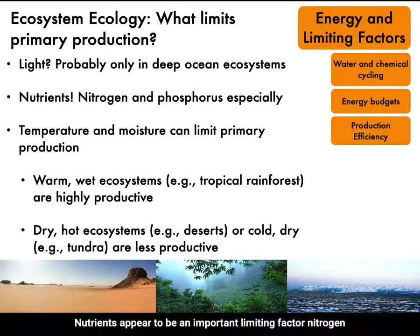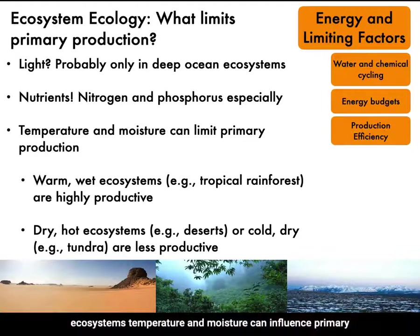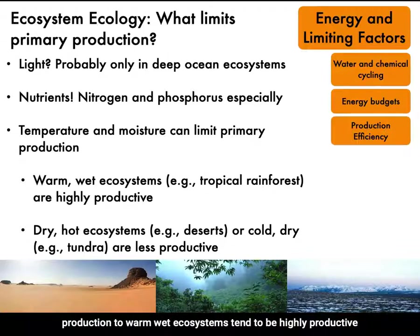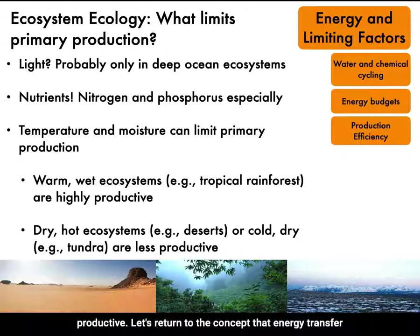Nutrients appear to be an important limiting factor — nitrogen and phosphorus in particular. Additionally, in terrestrial ecosystems, temperature and moisture can influence primary production too. Warm, wet ecosystems tend to be highly productive, while dry, hot ecosystems or dry and cold ecosystems are less productive.